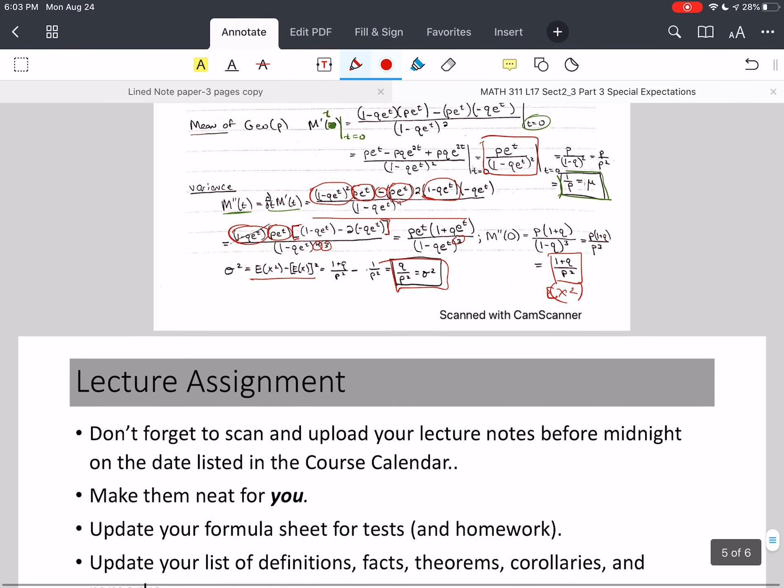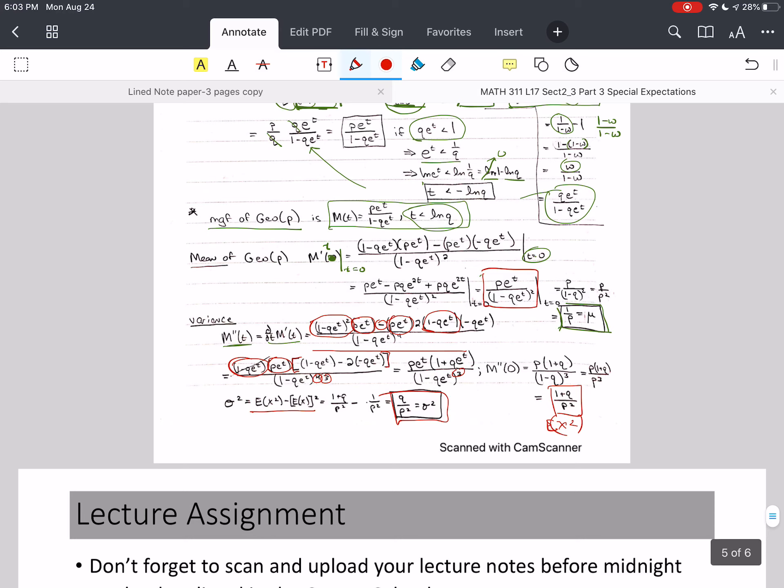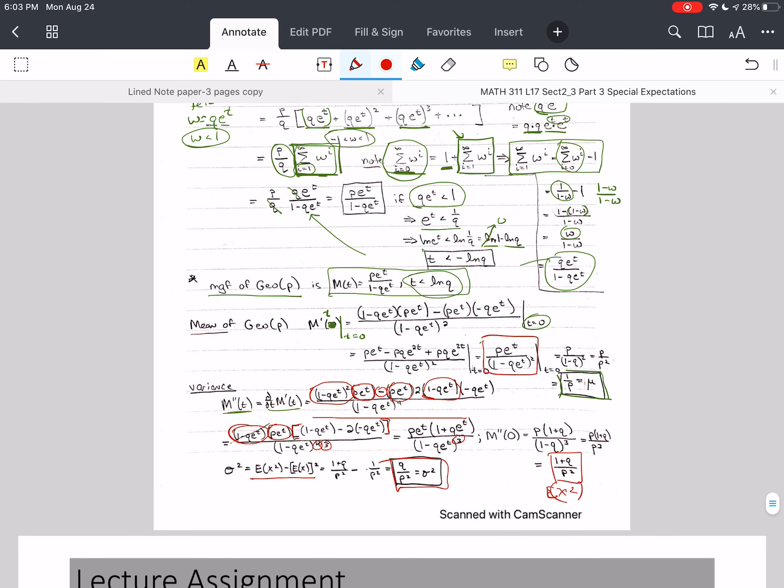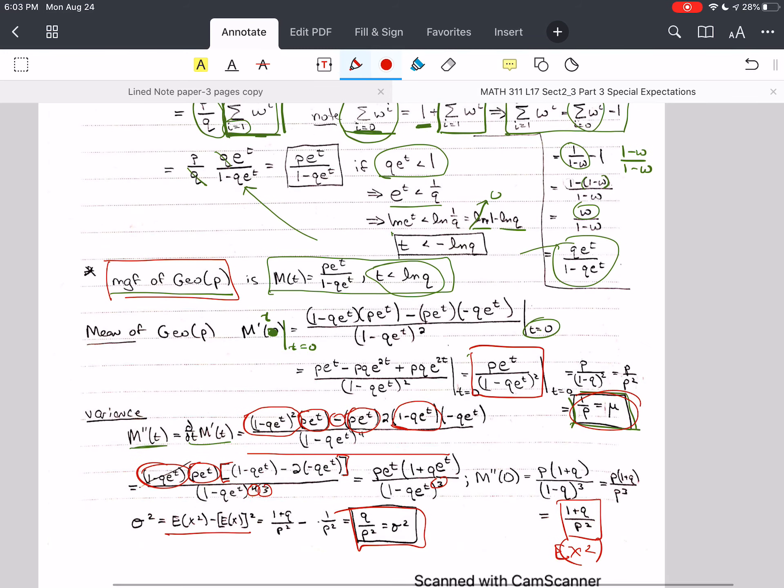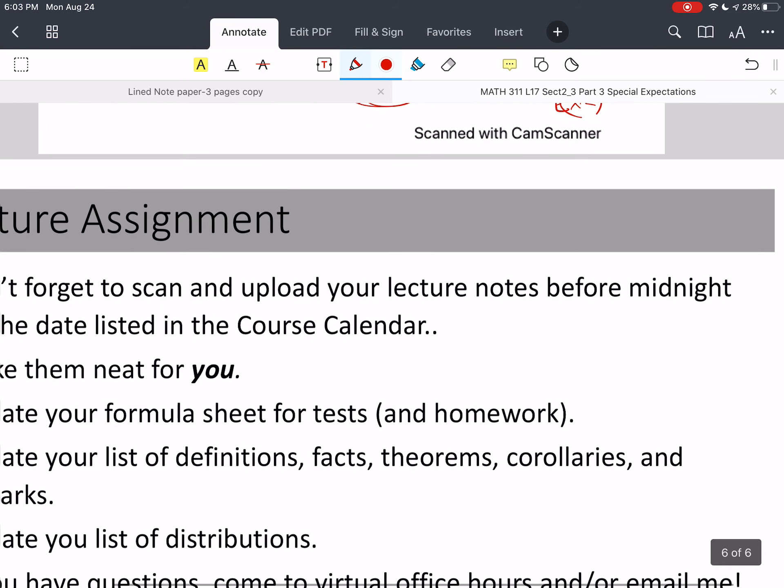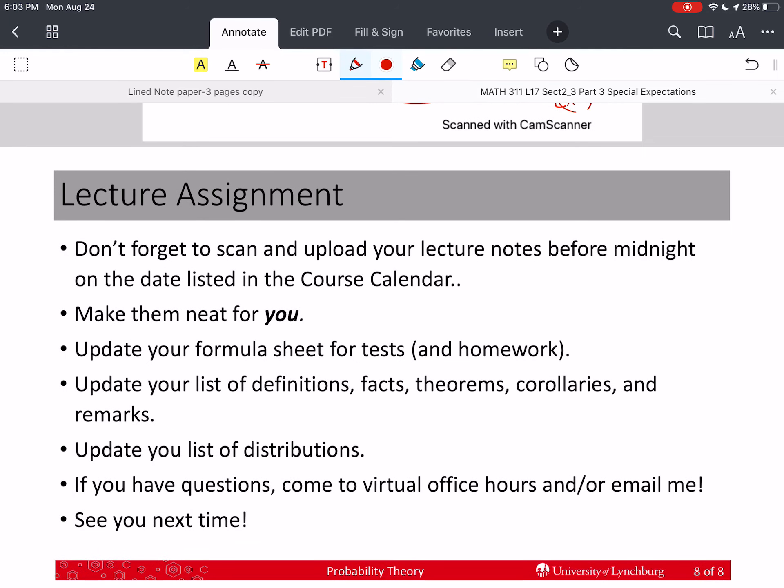So you'll want to update your list of distributions. With the geometric distribution on that page, you'll want to put the MGF. You'll want to put the mean and the variance. Don't forget to scan in your lecture notes before midnight of the date listed on the course calendar. Please make them neat for you, so you can read them and review them and study. Update your formula sheets, and update your list of distributions. If you have questions, come to Virtual Office Hours. If that still doesn't work for you, email me. We'll see you next time.